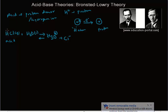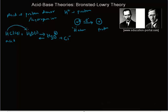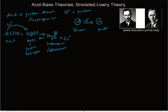HCl is called a Bronsted-Lowry acid because it has the ability to donate an H⁺ ion. Water here is accepting that proton, so water is called a proton acceptor — a Bronsted-Lowry base. The product H₃O⁺ is called the hydronium ion, also known as the oxonium ion.